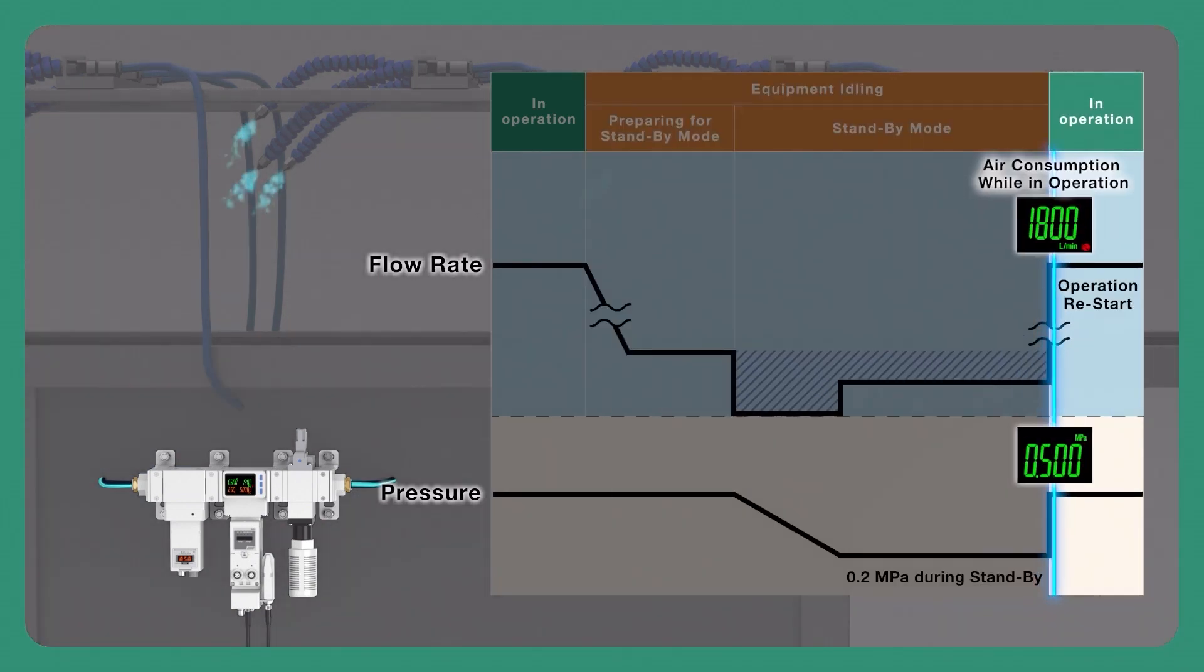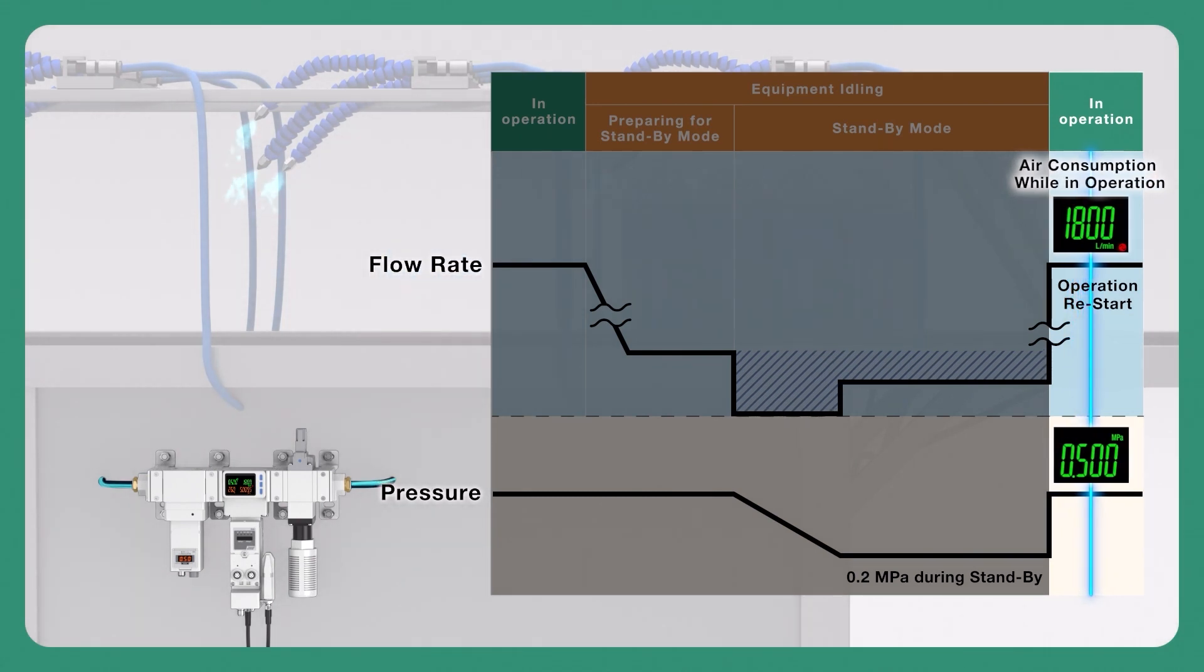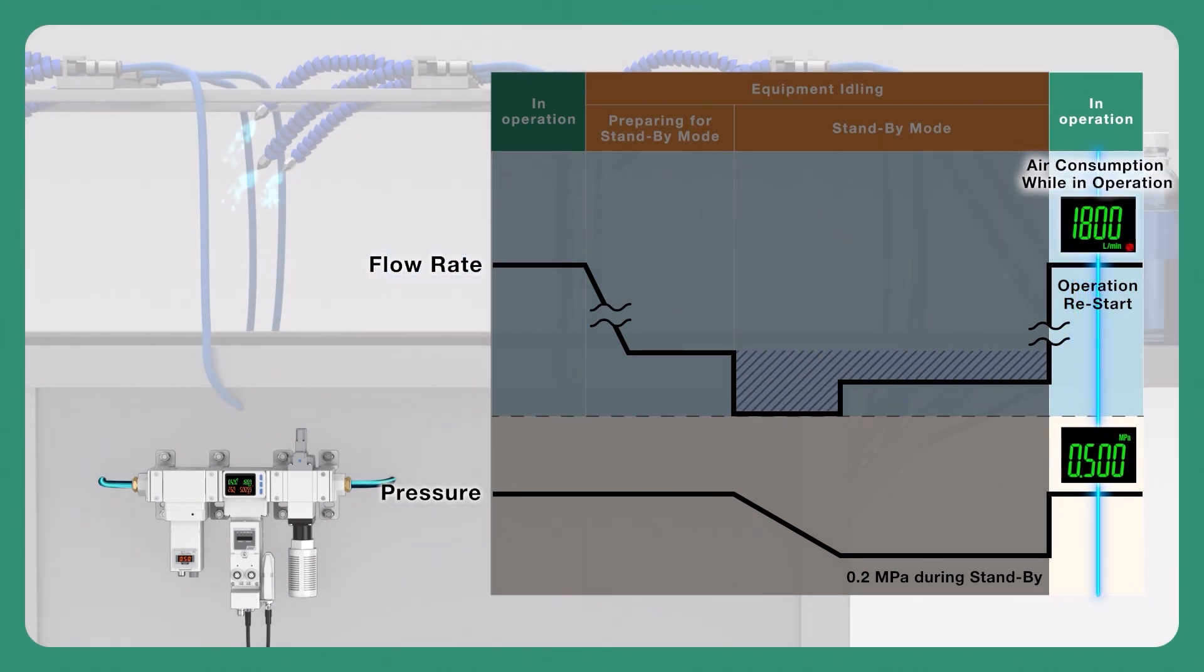When the standby signal is removed the air management system goes back to its operation mode and increases pressure back to normal levels.